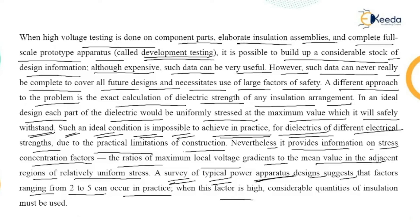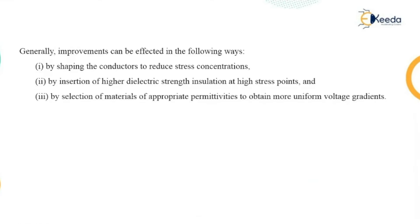When this factor is high, considerable quantities of insulation must be used. Improvements can be made in the following ways: by shaping conductors to reduce stress concentrations, by inserting higher dielectric strength insulation at high stress points, and by selecting materials of appropriate permittivities to obtain more uniform voltage gradients. That concludes this understanding of surge voltage, their distribution and control.